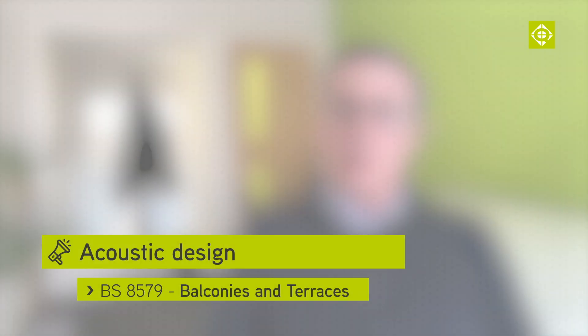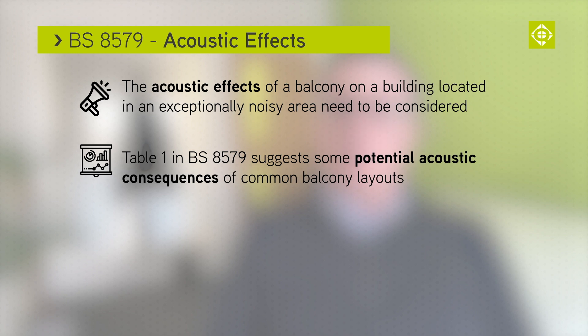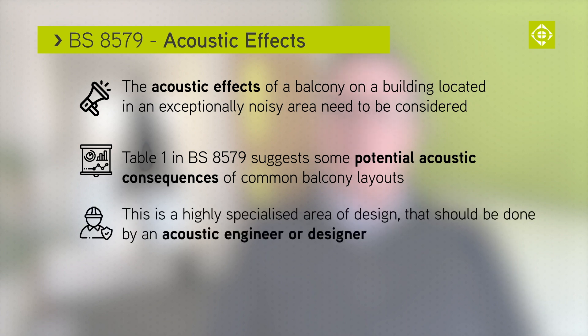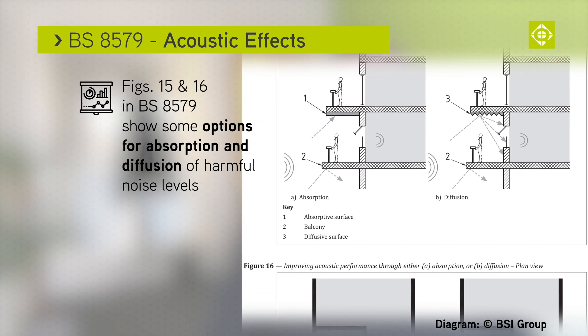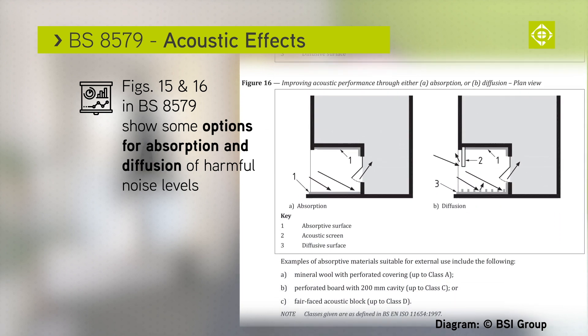Next let's look at acoustic design. The acoustic effects of a balcony on buildings located in exceptionally noisy areas should also be considered. Table 1 offers some common layouts and the potential consequences of those regarding acoustic reflections. This is obviously a very specialist area of design that should be done by an acoustic engineer or designer. Figures 15 and 16 show some potential likely options for either absorption or diffusion of harmful noise levels to both horizontal and vertical surfaces within typical balcony areas. The acoustic design of balconies and how they affect the indoor occupants is very much outside the scope of current building regulation requirements, but this new British standard does provide an interesting insight into good practice.